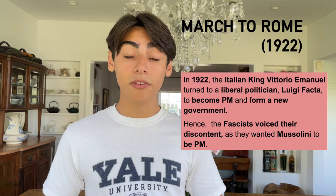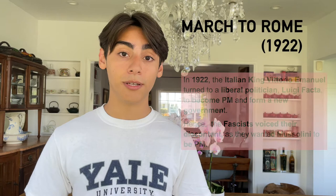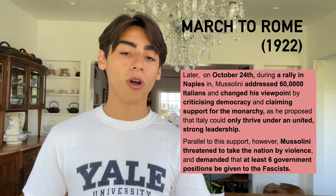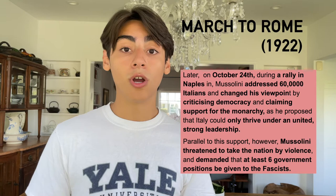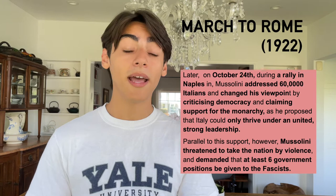The fascists were even more enraged with the monarchy, given that they thought it was completely unfair that a liberal was appointed to the premiership, given that the fascist movement had grown to such astronomic proportions in the country. Later, on October 24th, during a rally in Naples, Mussolini addressed 60,000 Italians and, again demonstrating his ideological inconsistencies, completely changed his viewpoint on democracy and claimed support for the monarchy instead. He eloquently argued that Italy had been divided between democracy and monarchy for far too long, and that the only way for Italy to thrive and for Italian greatness to be achieved was for the nation to be united under a strong leadership, which is why he claimed to support the monarchy at this time.